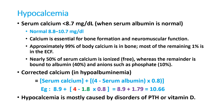Calcium can be bound with albumin and phosphates, so hypoalbuminemia can produce falsely low calcium levels. We have to correct the calcium levels in hypoalbuminemia. The correction formula is: corrected calcium = serum calcium + (4 minus serum albumin) × 0.8. For example, if a patient's calcium is 8.9 and albumin is 1.8, then 8.9 + (4 − 1.8) × 0.8 = 10.66, which is normal.